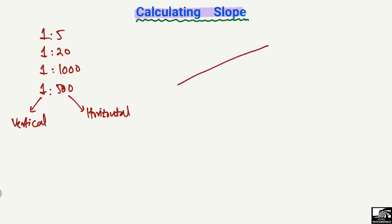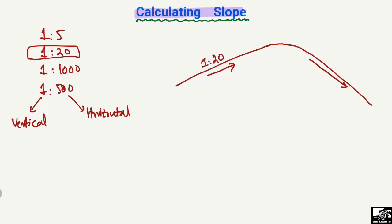Consider a road surface that is inclined — the slope increases as it goes to the top, and then a car moves down on the road surface. If the slope of this road is 1:20, that means the vertical part of this line is 1 meter and the horizontal part is 20 meters. So 20 meters is the horizontal length of the road when the vertical rise is 1 meter from the base.